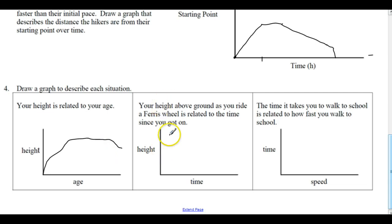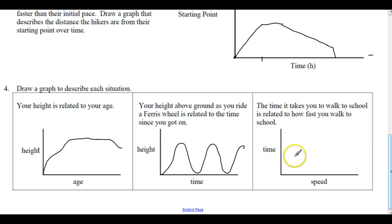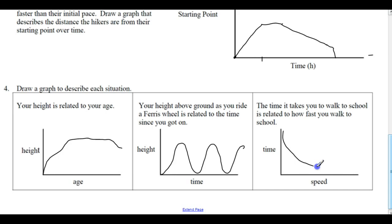Your height above the ground as you ride a Ferris wheel is related to time. We get on at the bottom, rise up to the top, come back down, rise up to the top, come back down — repeating that cycle. The time it takes you to walk to school is related to how fast you walk. Notice time is now the dependent variable — time depends on speed. At a fast speed it's a low amount of time; at a slow speed it's a high amount of time. Low speed means lots of time, fast speed means very little time, with in-between speeds giving in-between times.